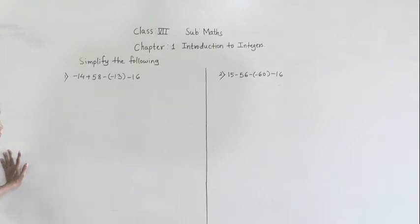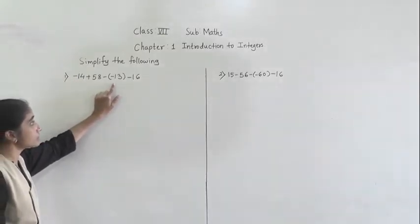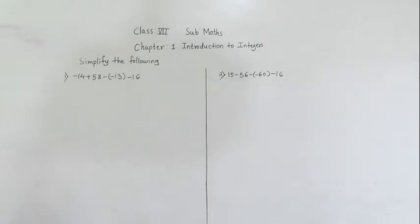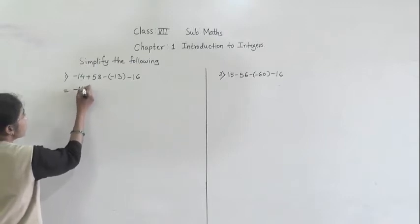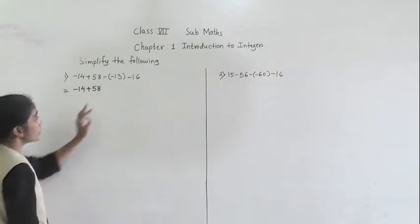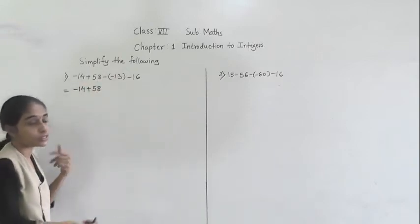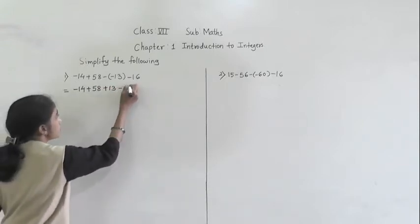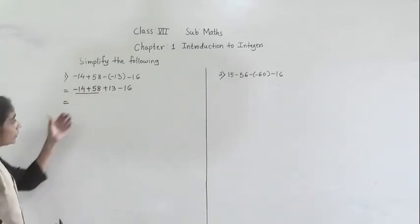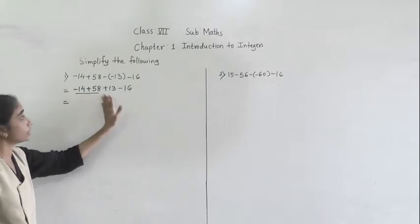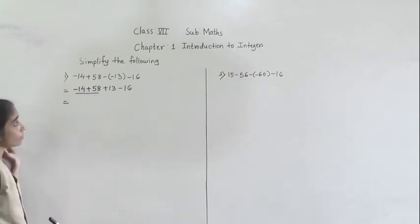Let's solve the next question: simplify the following. First example: minus 14 plus 58 minus minus 13 minus 16. First we are going to open the bracket. Minus 14 write as it is, plus 58 as it is. See minus minus: we open the bracket - minus minus equals plus, so plus 13 will come. Minus 16. Now underline the first two numbers. Minus plus means minus. So subtract 14 from 58: 8 minus 4 is 4, 5 minus 1 is 4. So we get 44.